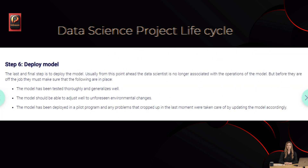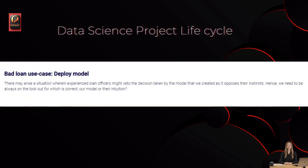Step 6: Deploy Model. The last and final step is to deploy the model. Usually from this point, the data scientist is no longer associated with the operations of the model. But before they are off the job, they must ensure: the model has been tested thoroughly and generalized well; the model is able to adjust to unforeseen environmental changes; and the model has been deployed in a pilot program with any last-moment problems resolved by updating the model accordingly. Bad loan use case — Deploy Model: There may arise a situation where experienced loan officers veto the decision taken by the model as it opposes their instincts. Hence, we need to always be on the lookout for which is correct — our model or their intuition.